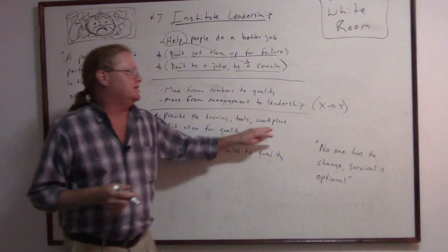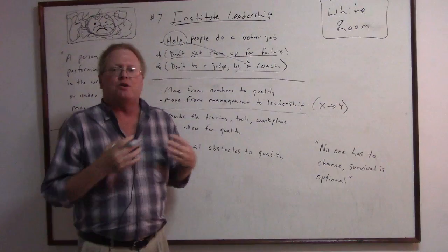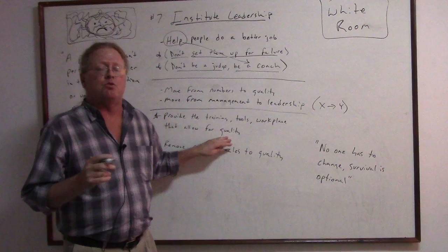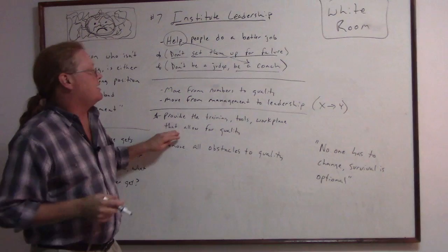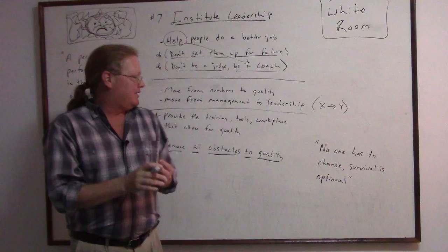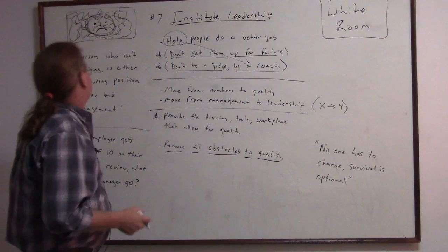Provide the training, tools, and workplace that allow for quality. The workplace isn't air conditioning or the setting, it's the workplace attitude, the culture, the values that all support quality. If you have negativity in the building, quality is going to suffer. If you have fear in the building, quality is going to suffer. Not only provide the training tools and workplace that allow for quality, but be mindful that there might be obstacles to quality that need to be removed. Just as we've mentioned, the fear, the toxic culture, internal competition, lack of communications. All of those are obstacles to having an operation that produces quality.